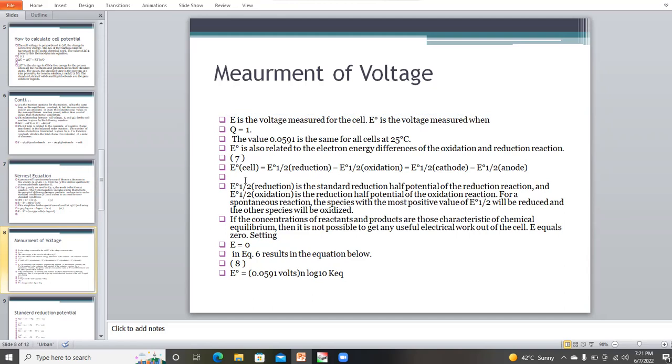E0 half reduction is the standard reduction potential of the reduction reaction and E0 half oxidation is the reduction potential of the oxidation reaction. For spontaneous reactions, the species with the most positive value of E0 half will be reduced and the other species will be oxidized. If the concentration of the reactants and the products are at chemical equilibrium, then it is not possible to get any useful electrical work from the cell. E equals 0.